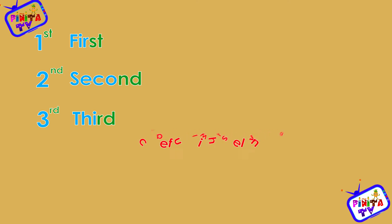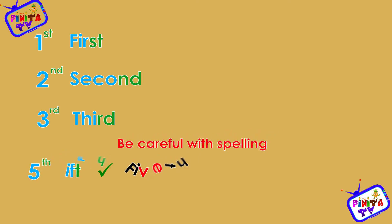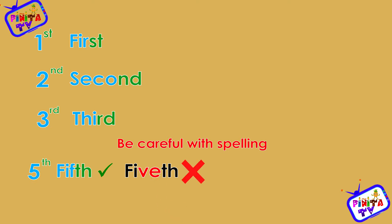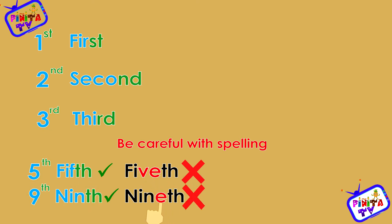Be careful with spelling. 5th — there is no E in this ordinal number. 9th — there is no E in this ordinal number either.